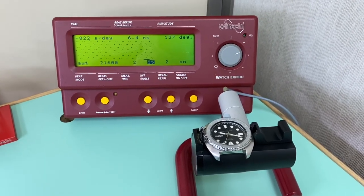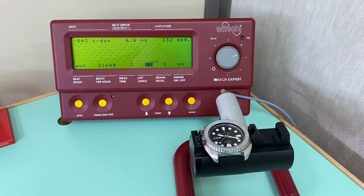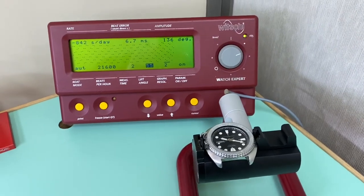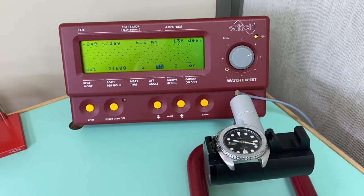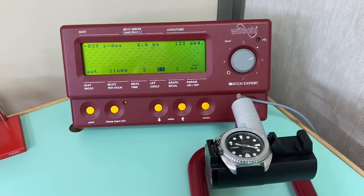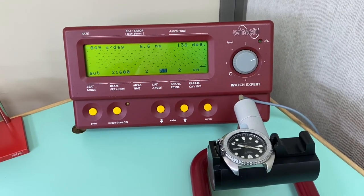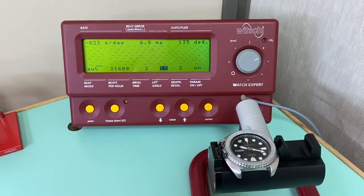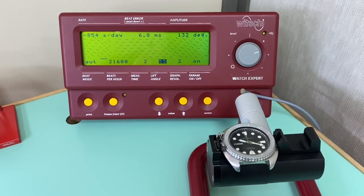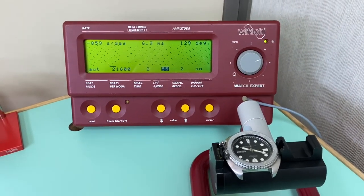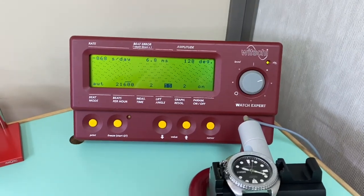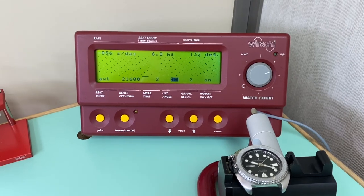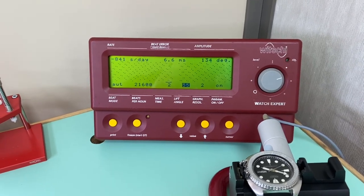We can see here that we've got some pretty low amplitude. The lift angle set to 55, it should be 54.5, but the Witchy timing machines don't have the half degree option. So we go for the 54 or 55 degree lift angle. We can see that the watch is all over the place. 6.8 is the beat error. We want that figure to be below 0.8 and as close to 0.0 as possible. And we can see that our timing is minus 861 seconds a day. So this watch is in definite need of an overhaul.